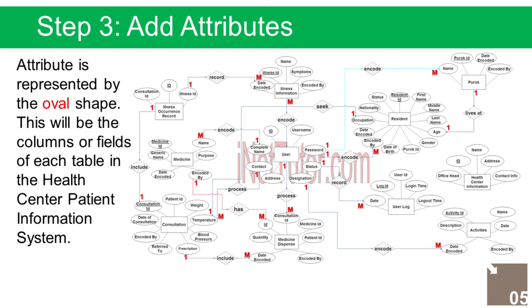Medicine entity attributes: Medicine ID (Primary Key, represented with underline), Name, Generic Name, Purpose, Date Encoded, and Encoded By (Foreign Key). Medicine Dispense entity attributes: Dispense ID (Primary Key, represented with underline), Consultation ID (Foreign Key), Medicine ID (Foreign Key), Patient ID (Foreign Key), Quantity, Date Encoded, and Encoded By (Foreign Key).